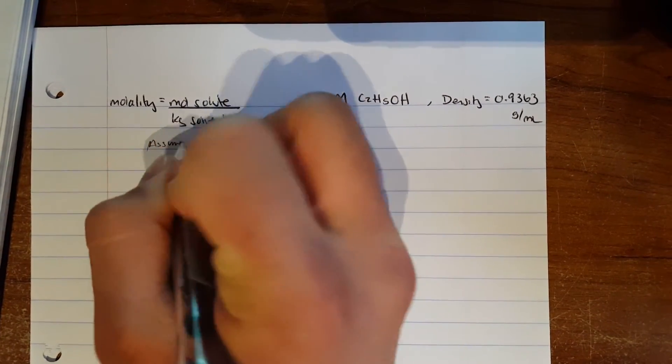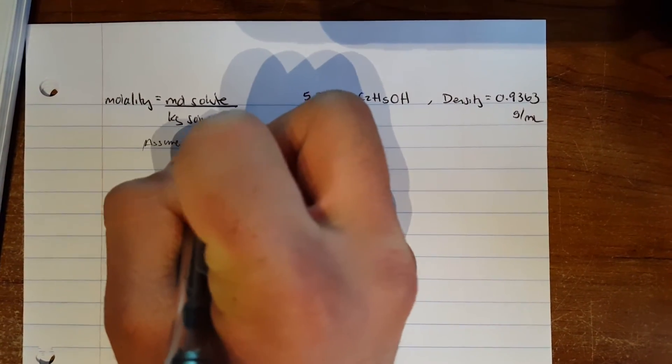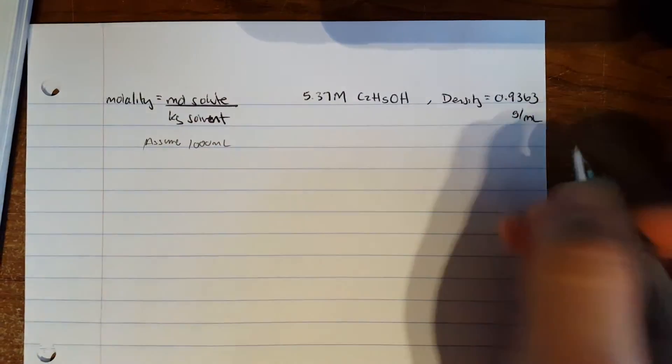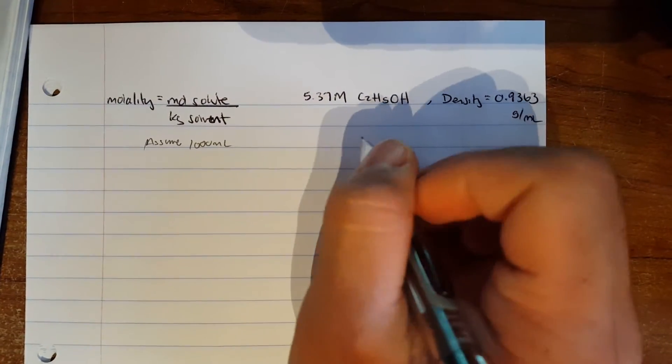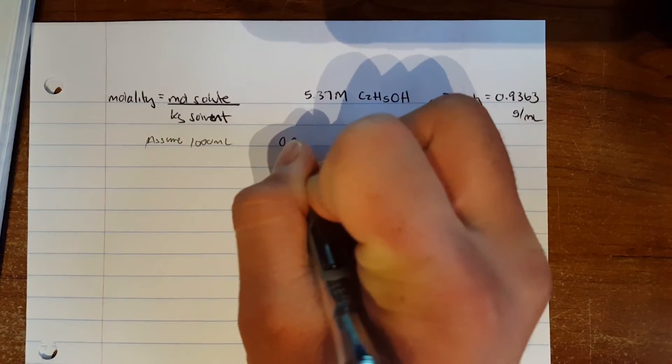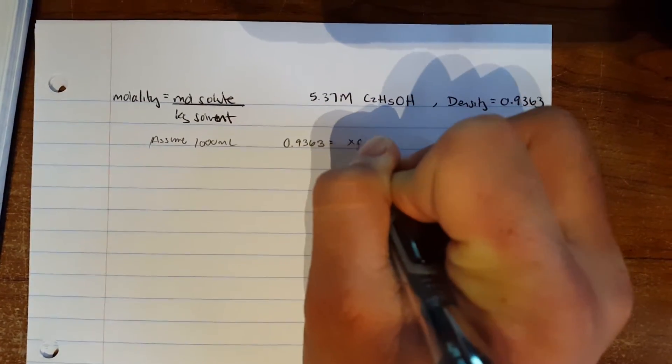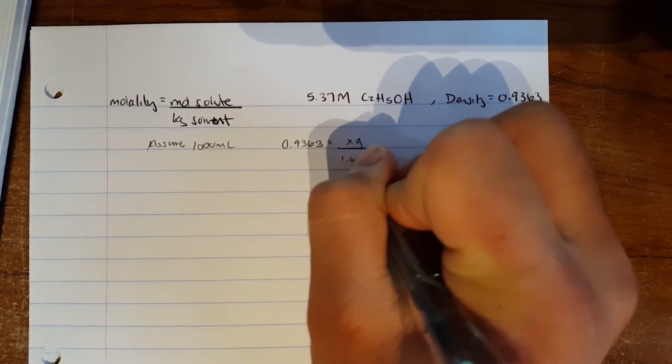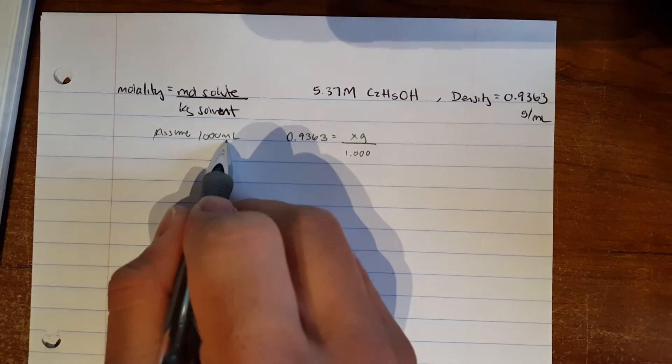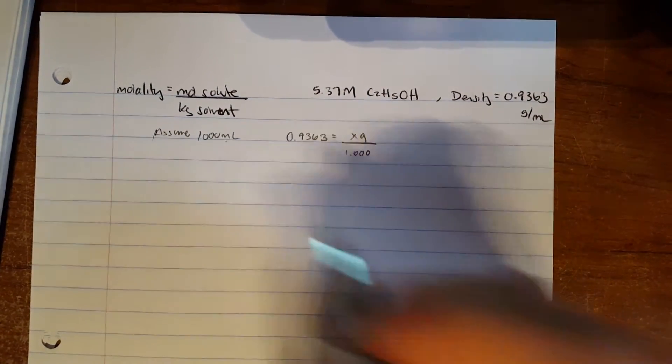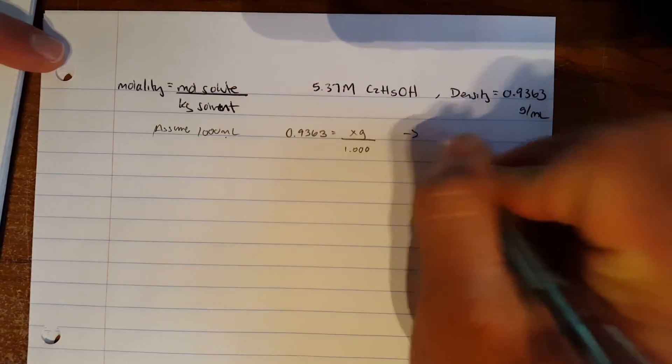We assume a 1000 milliliter solution. The formula for density is mass over volume, and density is given, so we'll have to find X grams in one liter. We're assuming 1000 milliliters, and that turns out to be 936.3 grams.